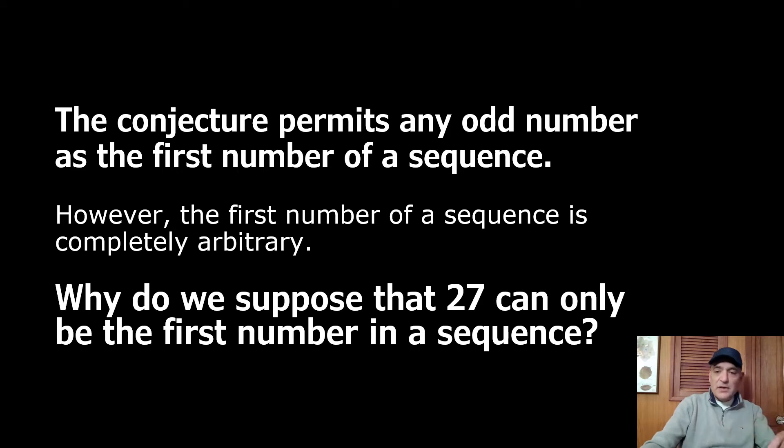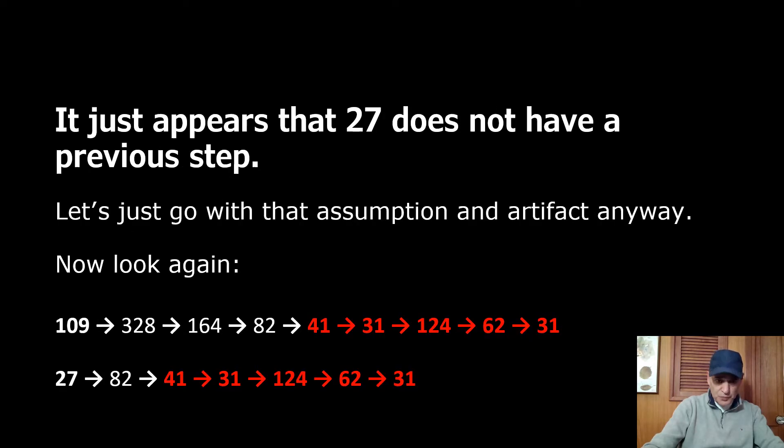So why do we suppose that 27 can only be the first number in a sequence? It just appears to people who consider the even numbers as well as the odd but 27 does not have a previous step. That's because we don't see 27 in any of the sequences.